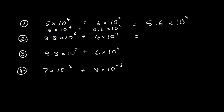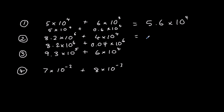Here we've got something times 10 to the power of 4 and something times 10 to the power of 6. I'm going to leave the larger power as 10 to the 6, so I divide the other coefficient by 10 twice, giving 0.04. This gives an answer of 8.24 times 10 to the power of 6.